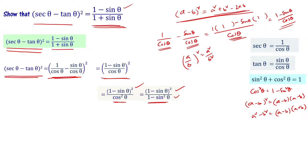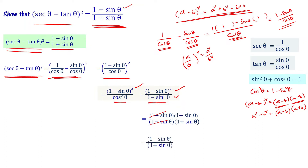Writing it out: numerator becomes 1 minus sin theta into 1 minus sin theta, and denominator becomes 1 minus sin theta into 1 plus sin theta. Now we can see that 1 minus sin theta appears in both the numerator and denominator, so they cancel. Therefore, sec theta minus tan theta whole square equals 1 minus sin theta divided by 1 plus sin theta. Hence proved.